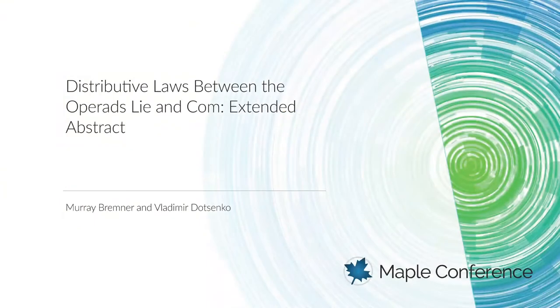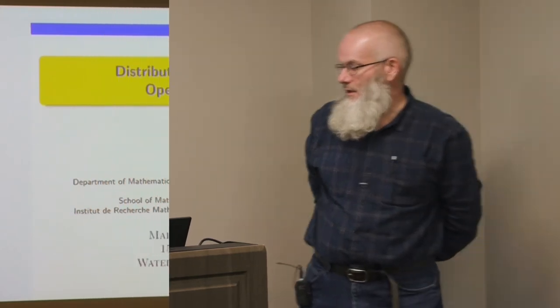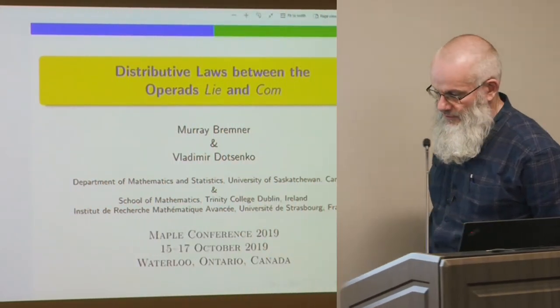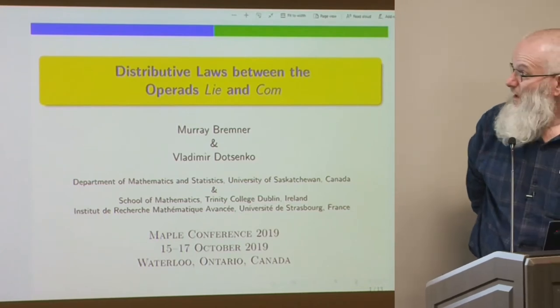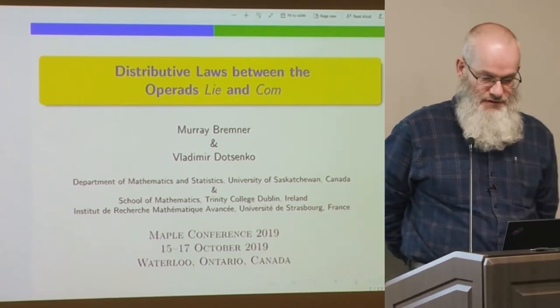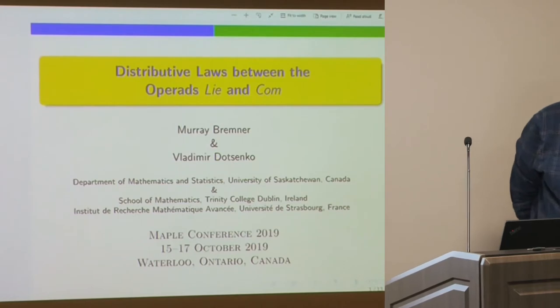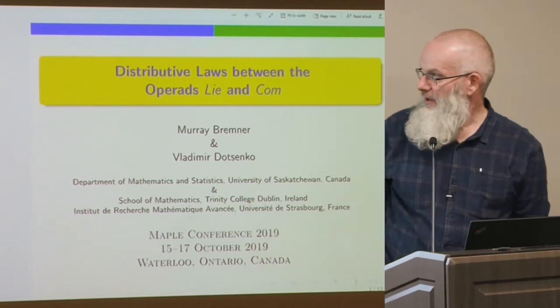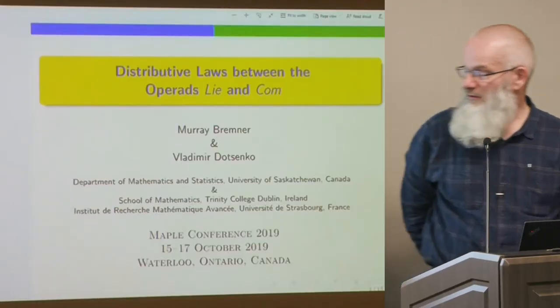I've got an application here of some Maple computing — basically linear algebra over polynomial rings and also some Gröbner basis computations. It's an application to a problem in algebraic operads, which most people don't know about, but you've probably been hearing about them more and more, especially in connection with combinatorics, theoretical physics, and topology.